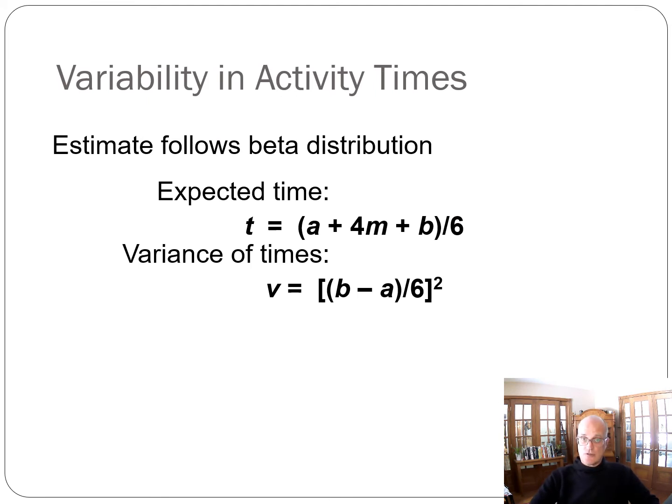When there's variability, the estimate follows a beta distribution. I'm not going to ask you about the beta distribution or show that to you in detail. But what it does allow us to do is come up with an expected time for a task. The expected time looks very much like a weighted average. The expected time is equal to A, which is the optimistic time, plus 4 times M, which is the most likely time, plus B, which is the pessimistic time, divided by 6. The 6 is simply reflecting the fact that you have 1 plus 4 is 5, plus 1 is 6. You are weighting the most likely time heavier than the other ones, and that gives you an expected time.